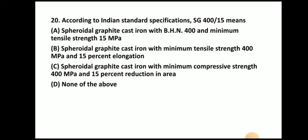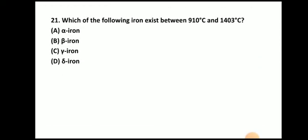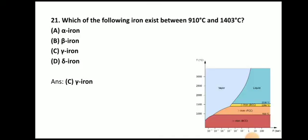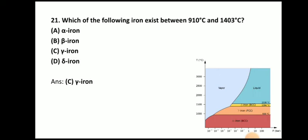Next question: According to Indian standard specification, SG400/15 means? The answer is spheroidal graphite cast iron with minimum tensile strength of 400 MPa and 15% elongation. Next question: Which of the following iron exists between 910°C to 1403°C? The answer is gamma iron, which is in FCC form and exists between 910°C to 1403°C.